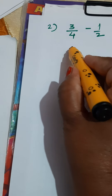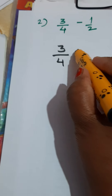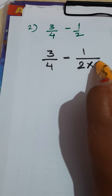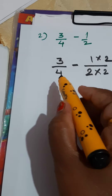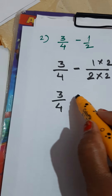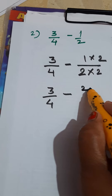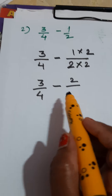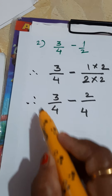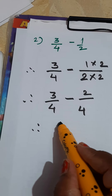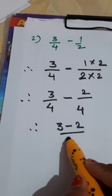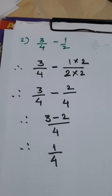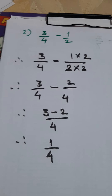Let's write the first fraction as it is: 3 upon 4 minus 1 upon 2. Multiply here also by 2 and here also by 2. So, 3 upon 4 minus — 2 ones are 2, 2 twos are 4. Now they are like fractions, so easily we can subtract the numerators. Give them the common denominator: 3 minus 2 upon 4. 3 minus 2 is 1. 1 upon 4. This is the answer. This much simple — you have to observe it carefully and do practice.